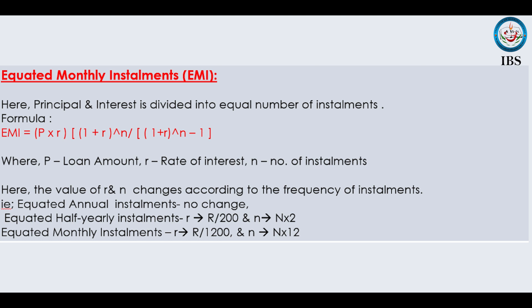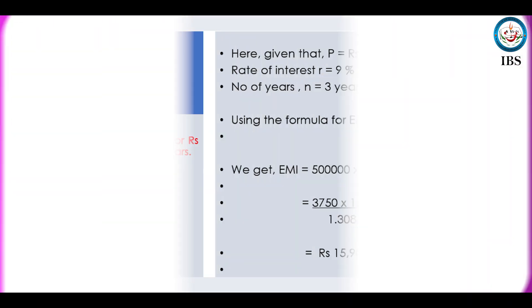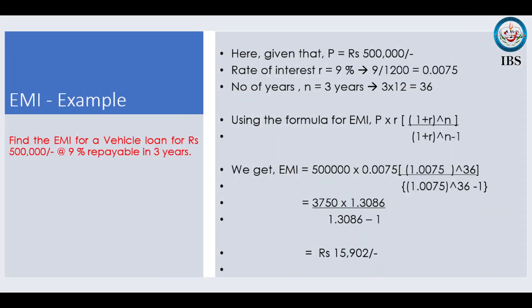It is a very simple concept but students usually commit a mistake. Now let us consider an example. You have to find out the equated monthly installments of a loan — a vehicle loan of Rs 5 lakh payable in 3 years carrying an interest rate of 9%. The loan amount is 5 lakh, the repayment period is 3 years and the rate of interest is 9%. So P is 5 lakh.